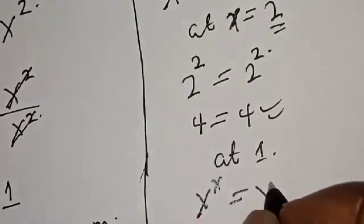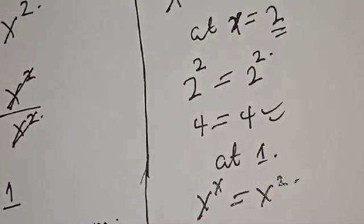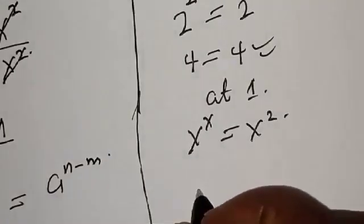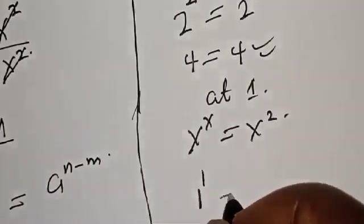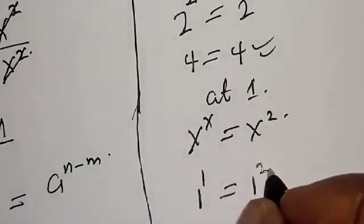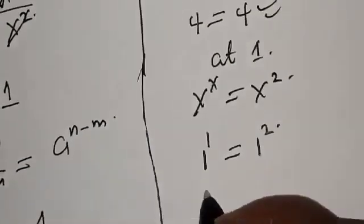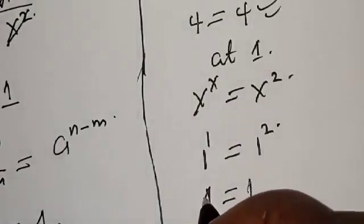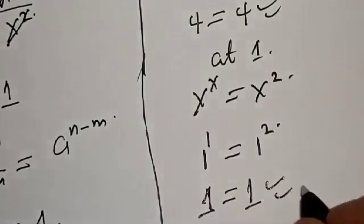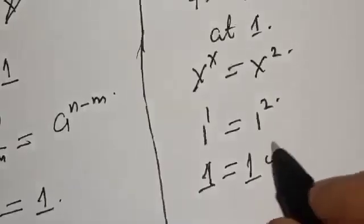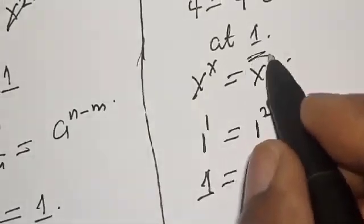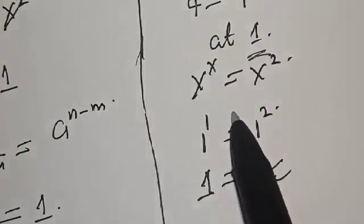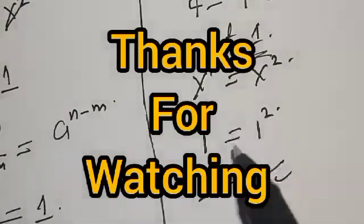Let's check at s equal to one. We have one raised to power one is equal to one squared. One raised to power one is one, and one squared is one, meaning the left hand side equals the right hand side. We satisfy the given equation at s equal to one. If you have enjoyed the class, please don't forget to like, share, comment and subscribe. Thank you.